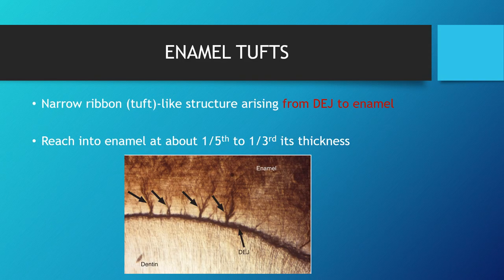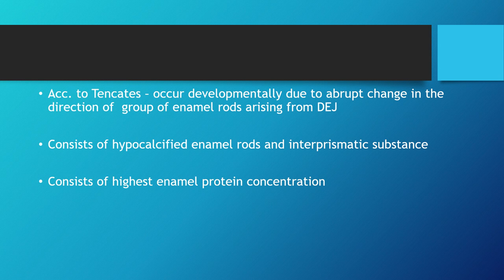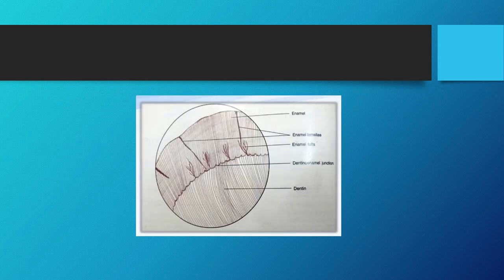Enamel tufts are narrow, ribbon-like, tuft-shaped structures arising from the DEJ and reaching into the enamel to about one-fifth to one-third of its thickness. According to Ten Cate, they occur developmentally due to an abrupt change in the direction of a few groups of enamel rods. They consist of hypocalcified enamel rods and interprismatic substances and have the highest enamel protein concentration among all hypocalcified structures.